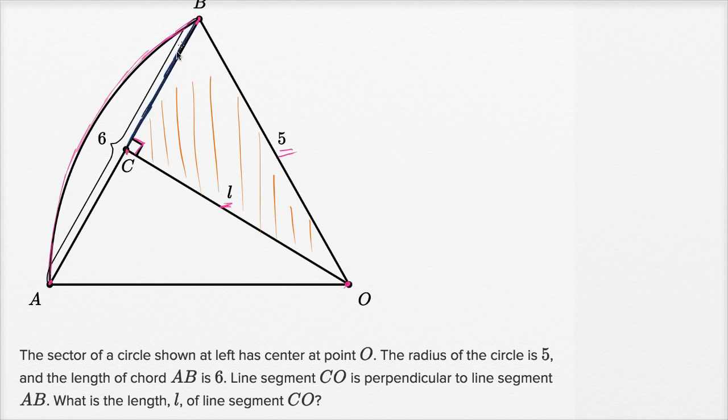The Pythagorean theorem would tell us that the length of segment CB squared plus L squared is going to be equal to the hypotenuse squared, is going to be equal to 25. But we don't exactly know the length of segment CB just yet. It's tempting to say that it's three, it looks like it's half of the six, but we don't know that for sure just yet.